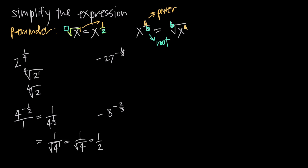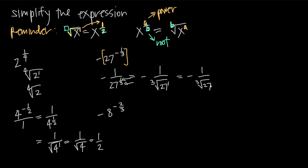Here we have negative 27 to the negative 1/3. Order of operations tells us we have to deal with 27 to the negative 1/3 before applying the negative sign out in front. So leaving the negative sign out front, 27 to the negative 1/3 becomes 1 over 27 to the positive 1/3 — we move the whole thing to the denominator to make the exponent positive. This is negative 1 over the third root of 27. The third root of 27 is whatever number multiplied by itself 3 times gives 27 — that's 3, because 3 × 3 × 3 = 27. So this becomes negative 1/3.